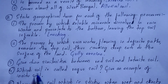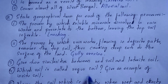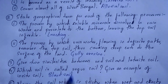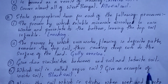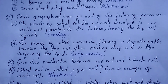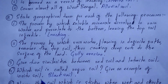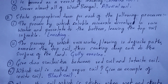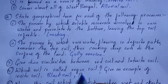Question number four: which soil is called regur soil? Black soil is known as regur soil. Another question: give an example of in situ soils. In situ soils are those soils which are formed where they are found. One example of in situ soil is black soil itself.